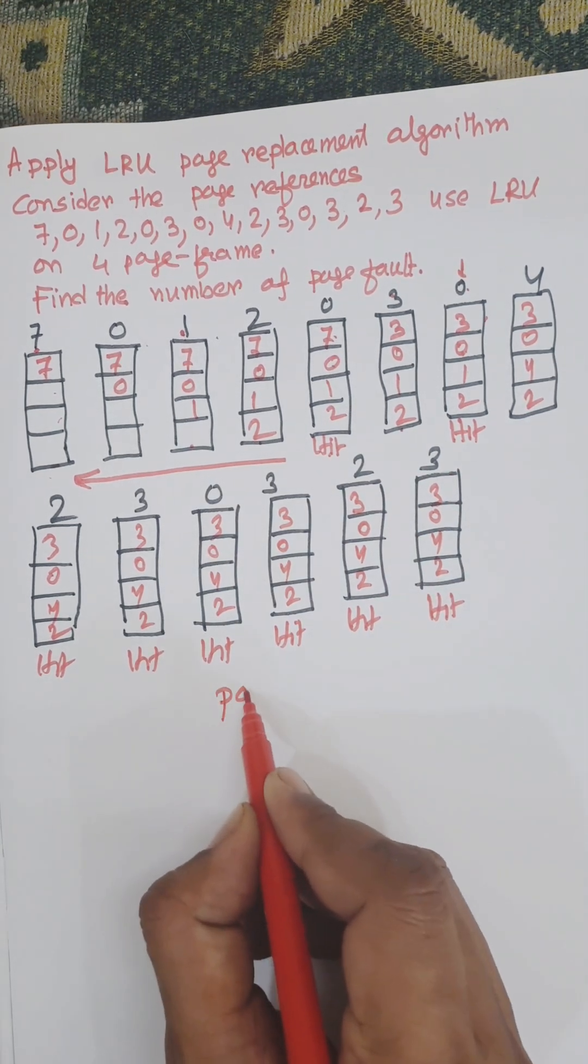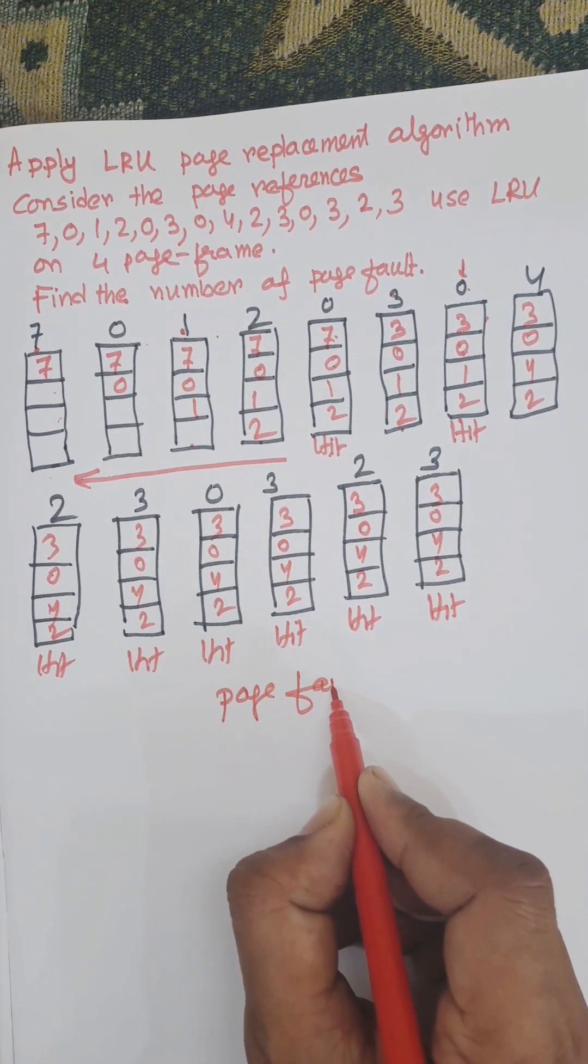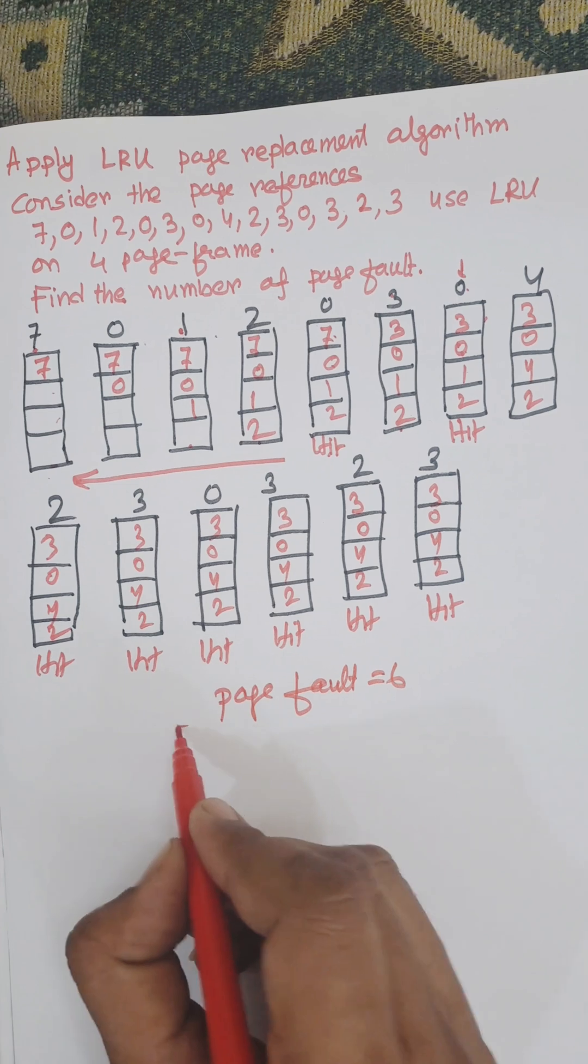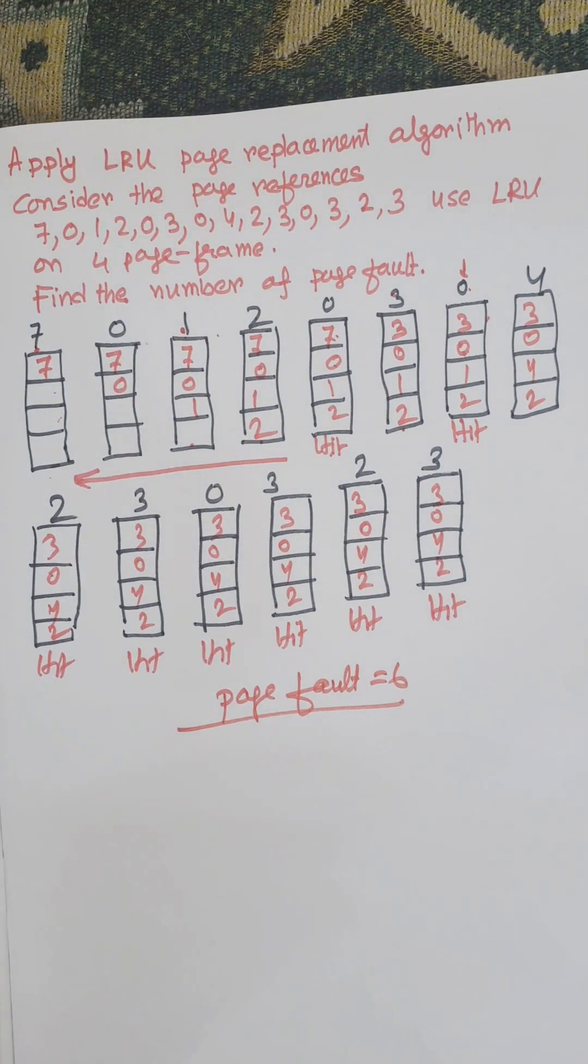Your page fault equals 6. This is the LRU page replacement algorithm. Thank you very much for watching this video. Share and subscribe. Thank you.